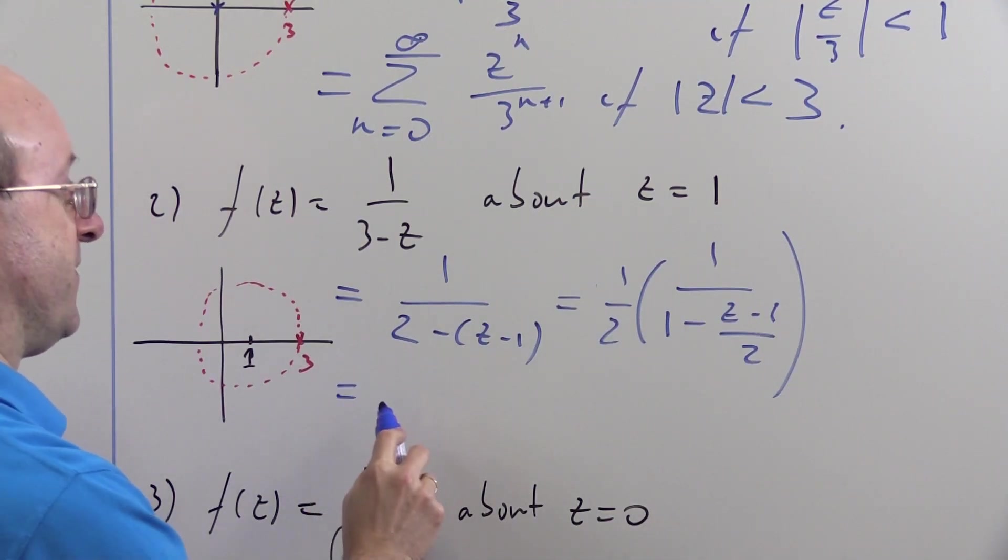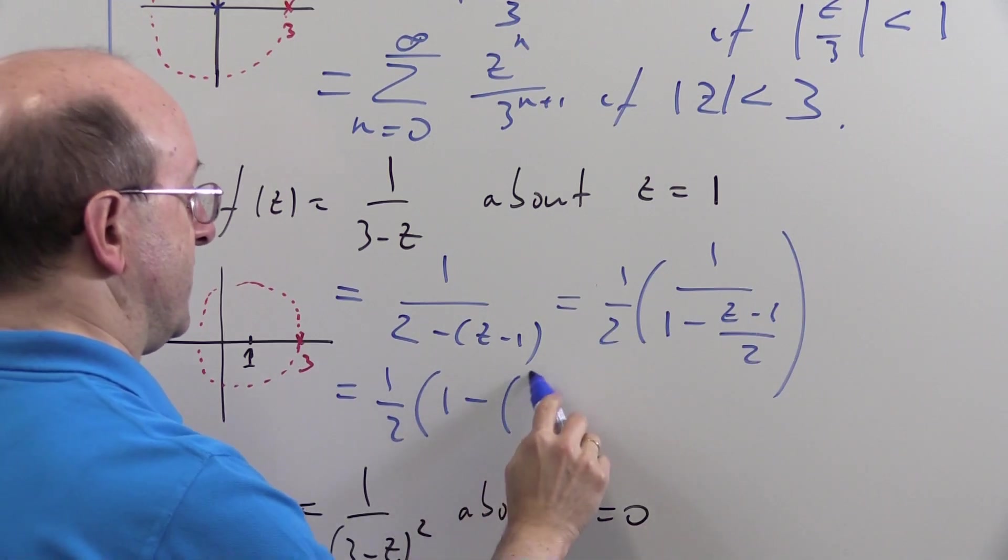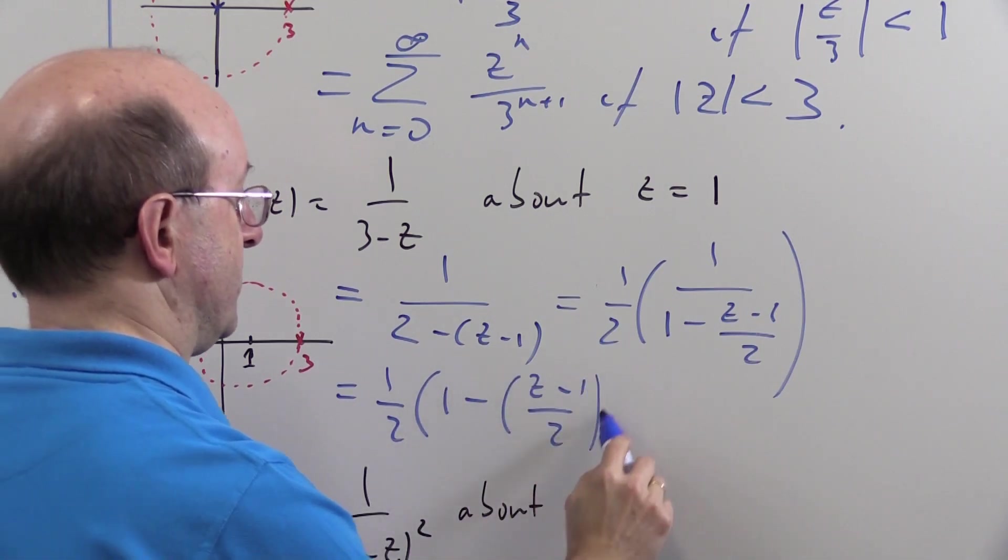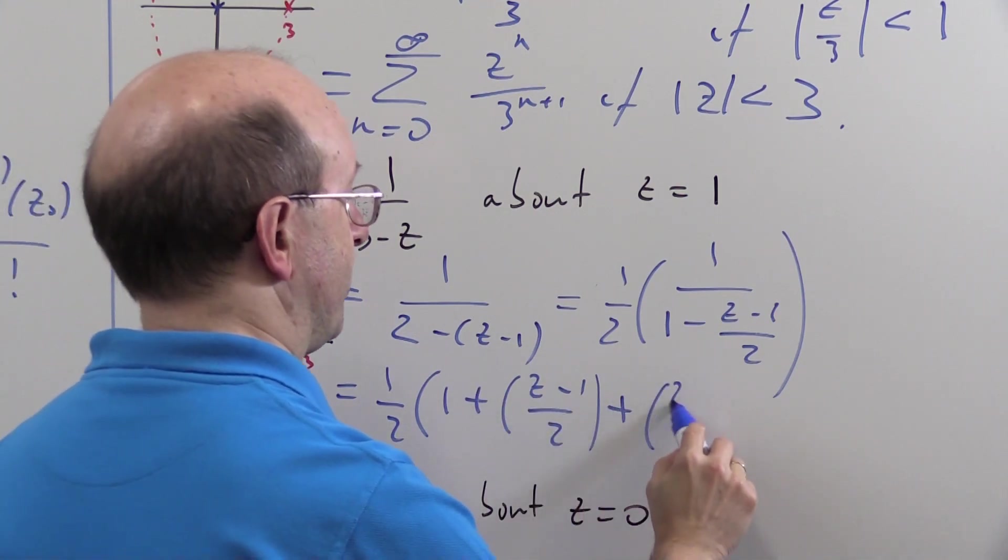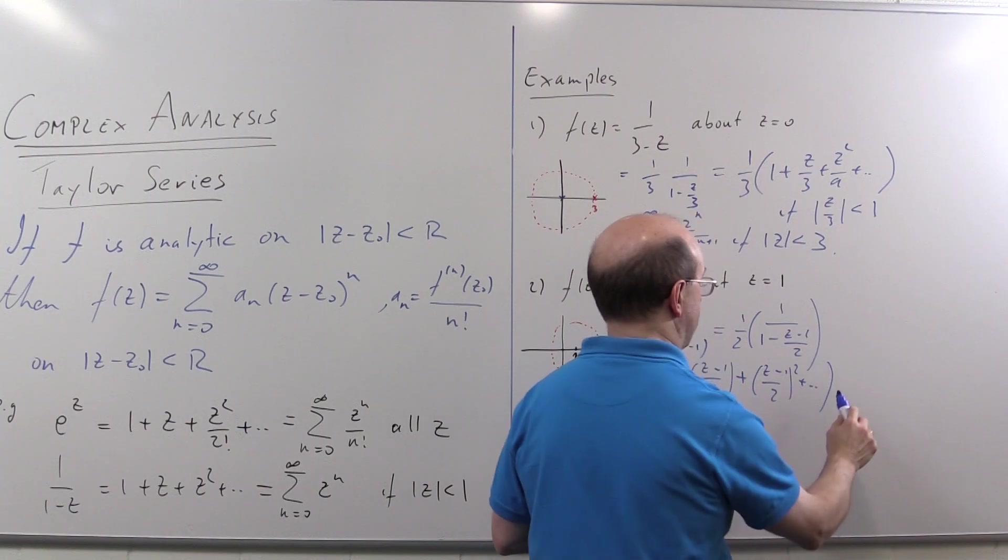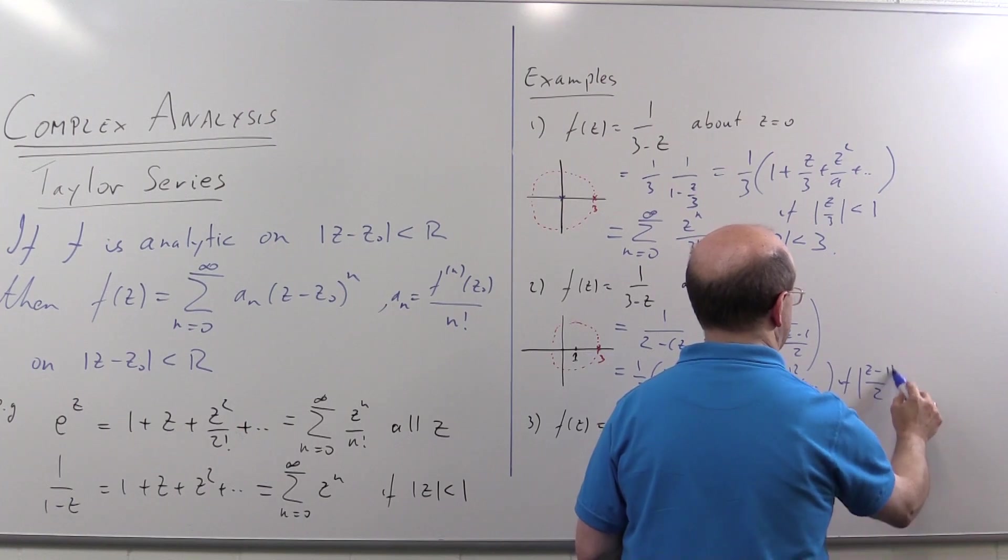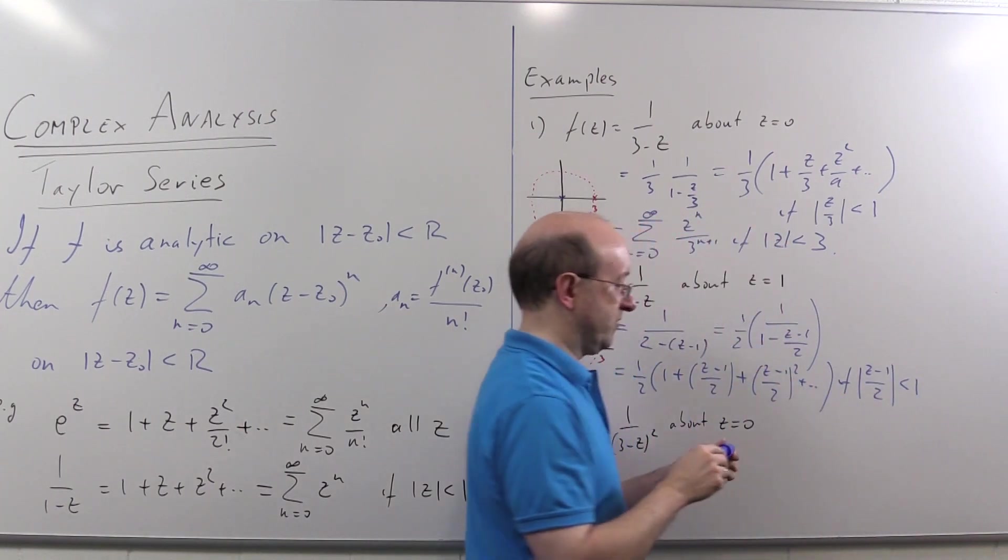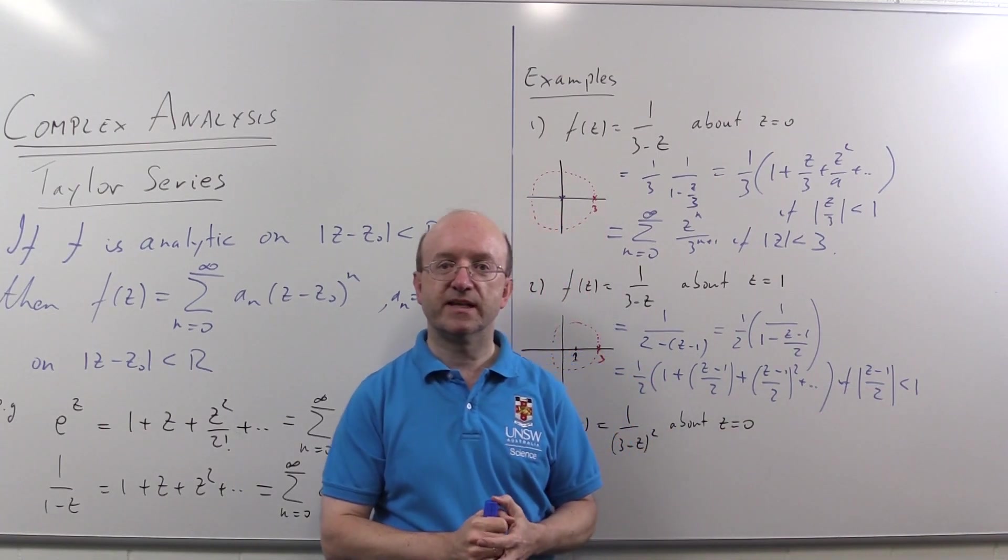We will get one half times one minus z minus one over two plus z minus one over two squared plus and so on. And that will be convergent if mod z minus one over two is less than one. In other words, if mod z minus one is less than two.